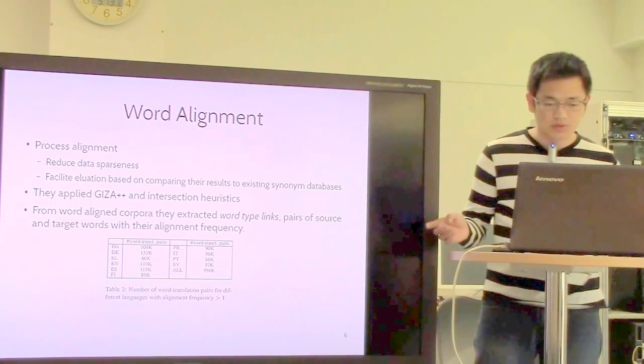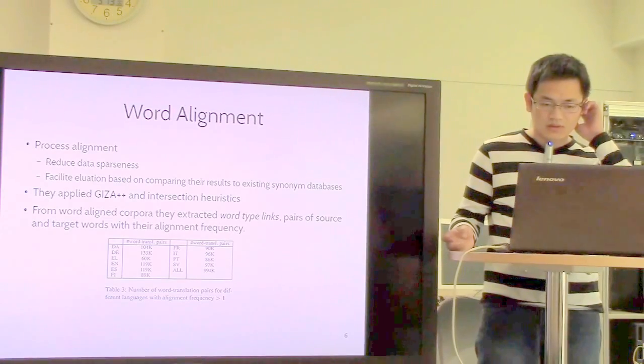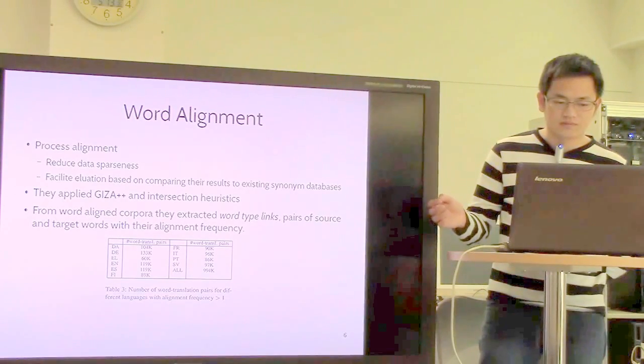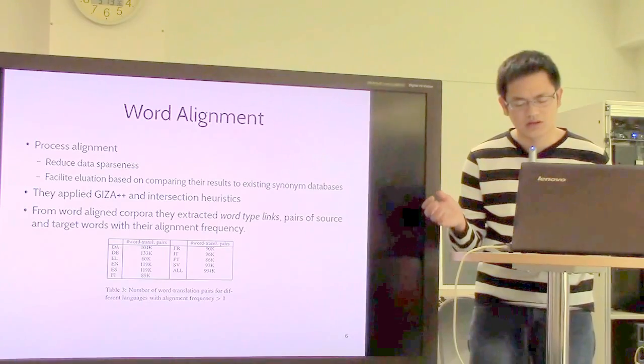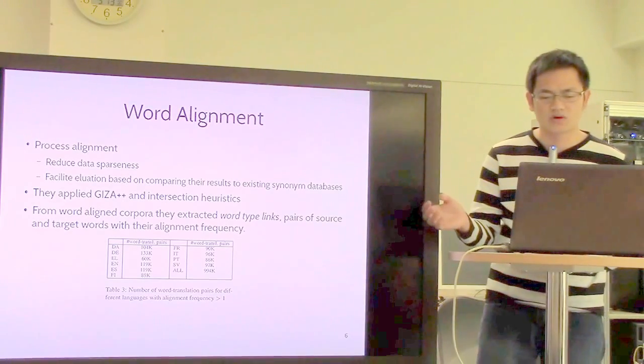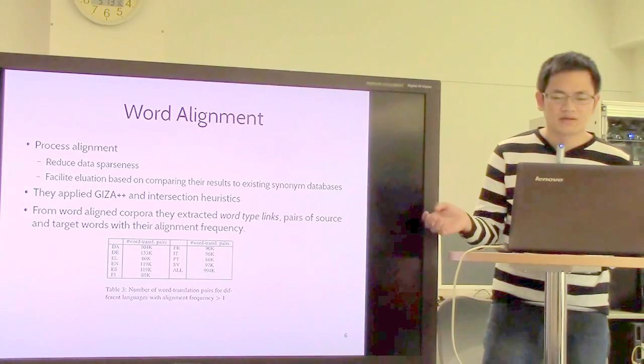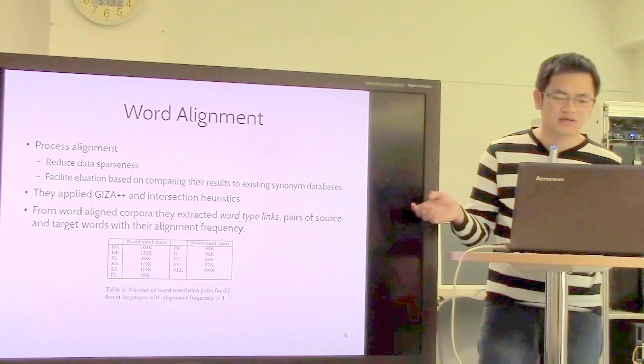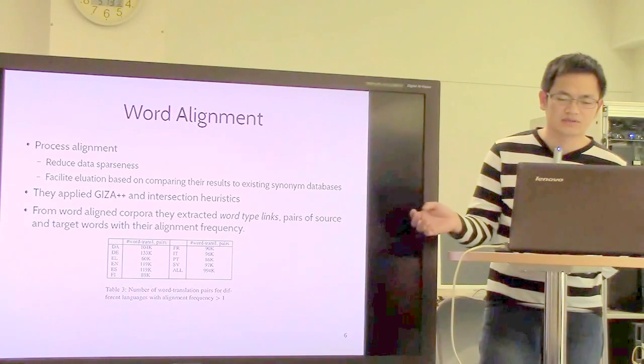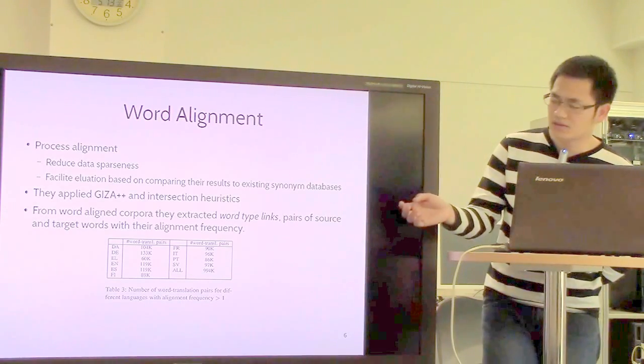They use the model GIZA++, an open source tool. From the word alignment corpus, they extract word-type links—pairs of source and target words—and the alignment frequency in this table.